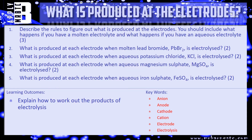Right, let's see how much you've picked up throughout the video. Question one: tell me the rules to figure out what is produced at each electrode, including what happens with a molten electrolyte and an aqueous electrolyte - three marks, one for molten, two for aqueous. Question two: what is produced at each electrode when molten lead bromide is electrolysed? Question three: aqueous potassium chloride. Question four: magnesium sulfate aqueous. Question five: iron sulfate aqueous. Remember the rules - check reactivity for the metal and check for a halide for the non-metal.